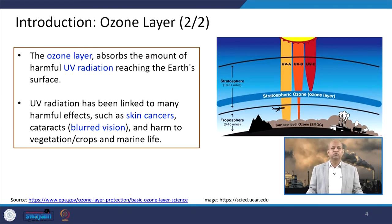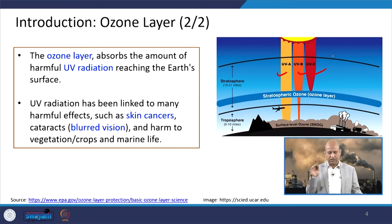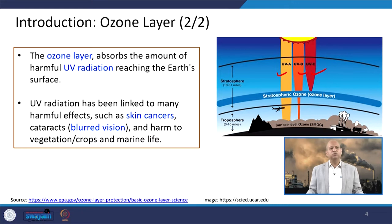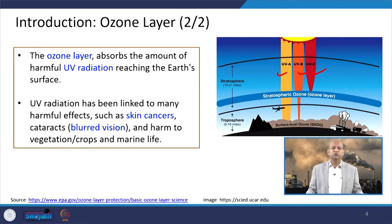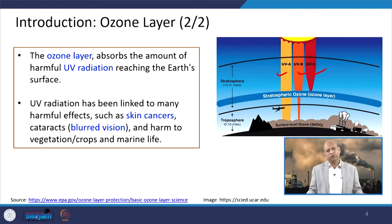This ozone layer absorbs harmful ultraviolet rays, which can be of type A, B, or C — different parts of the spectrum. UV radiation has been linked to many harmful effects such as skin cancers, cataracts, blurred vision, and it can also damage crops, vegetation, and marine life. So UV protection through the ozone layer is truly a building block of life on the earth's surface.